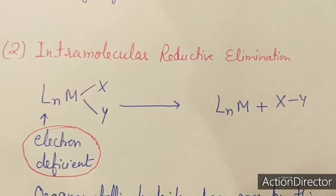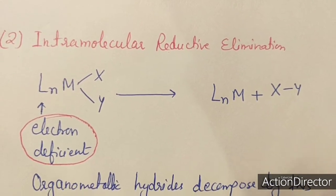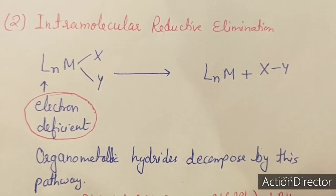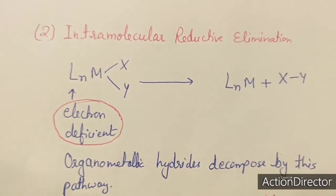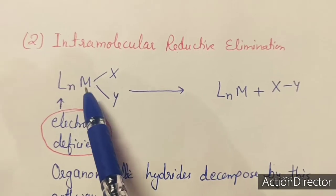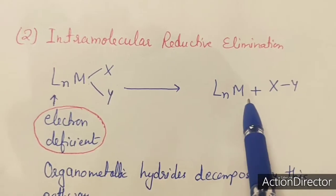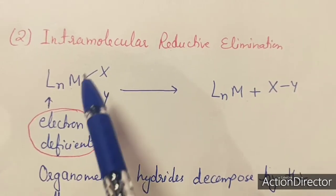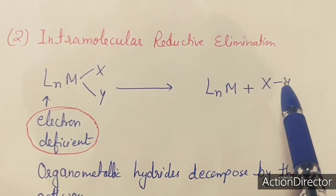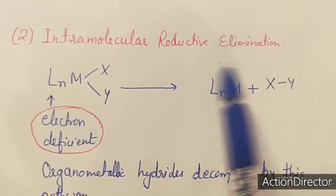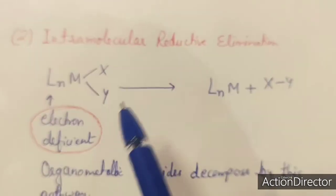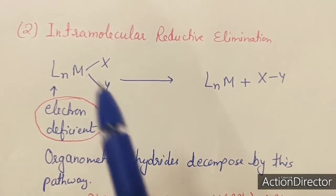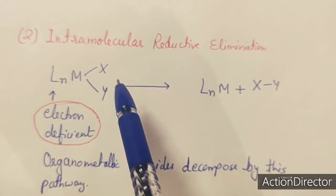The second type of decomposition pathway is intramolecular reductive elimination. Reductive elimination generally occurs immediately after oxidative addition. Reductive means a decrease in the oxidation state of the metal. In these reactions, the oxidation state of the metal decreases, and the coordination number also decreases as two elements or groups are eliminated. This reductive elimination reaction occurs within a molecule and is one of the steps in homogeneous catalytic processes.